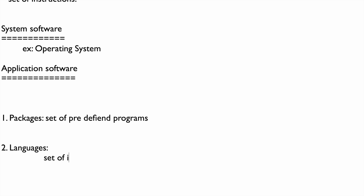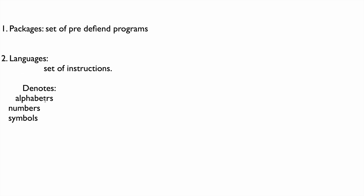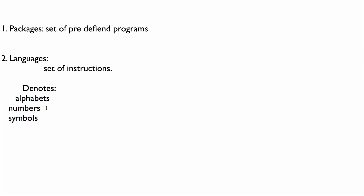The second category is languages. A language is nothing but a set of instructions arranged in a meaningful format or systematic order. A language uses alphabets A to Z, numbers 0 to 9, and symbols.